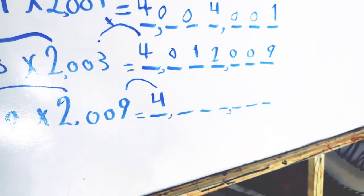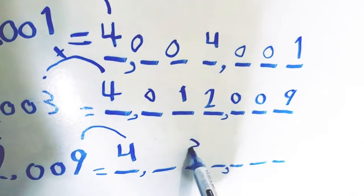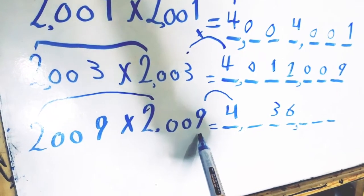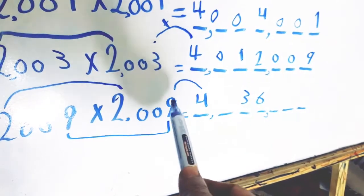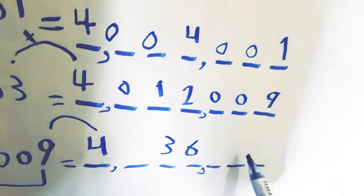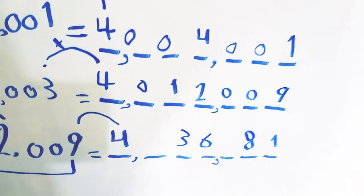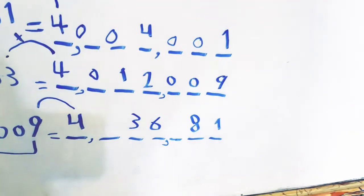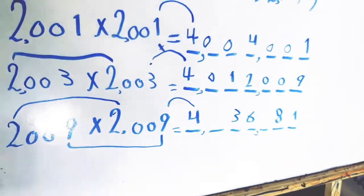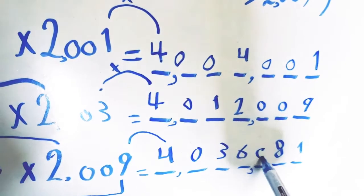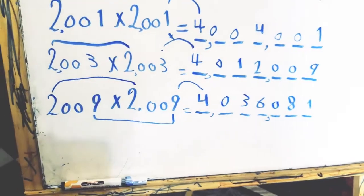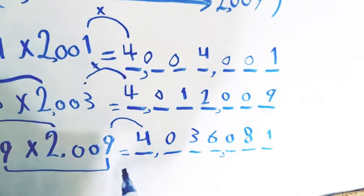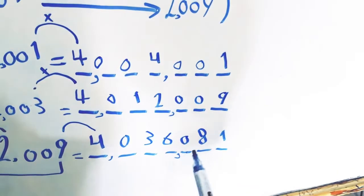We multiply 4 by 9: 4 times 9 equals 36. The last step: we multiply the last digit by itself, so 9 times 9 equals 81. The product must have seven digits; we have five digits here, so the missing digits are replaced by zero. The final product of 2009 times 2009 equals four million, thirty-six thousand and eighty-one.